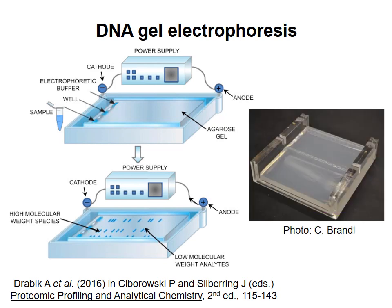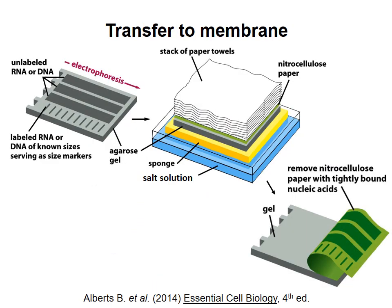Instead, you transfer the RNA from the gel onto a membrane. You take the gel with the separated RNA and lay a nitrocellulose or nylon membrane flat on top of it. Then you put the gel and membrane on a sponge sitting in a salt solution and stack some dry paper towels on top. The salt solution will move up into the paper towels by capillary action, and the RNA will move along with it — out of the gel and onto the membrane. Eventually all the RNA will be transferred onto the membrane.